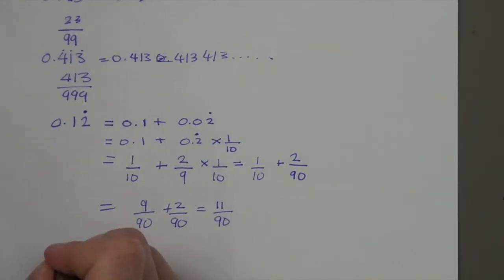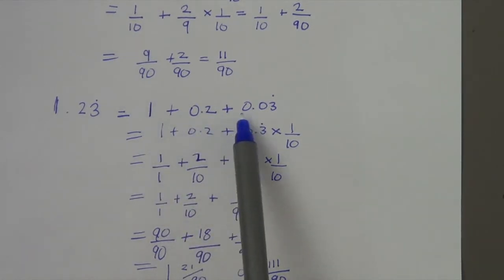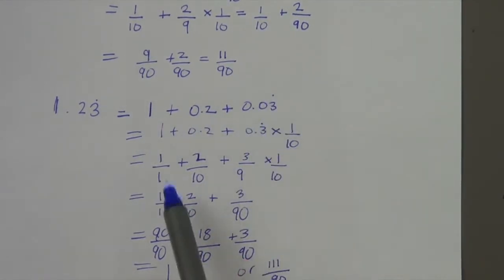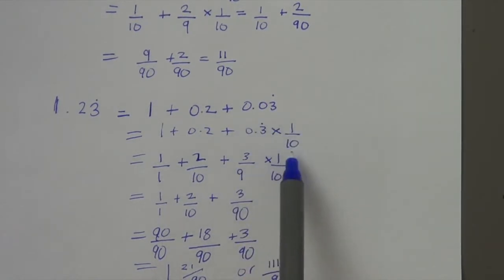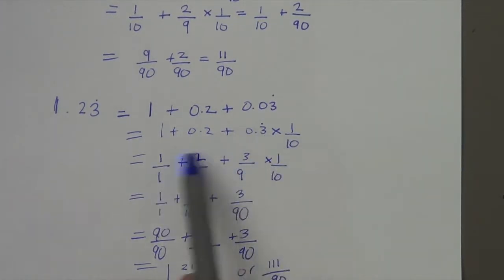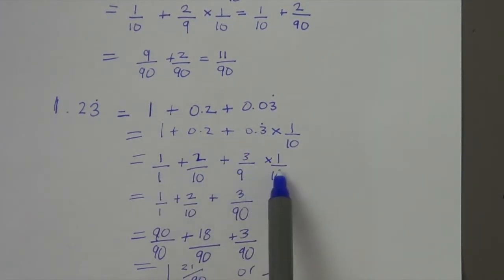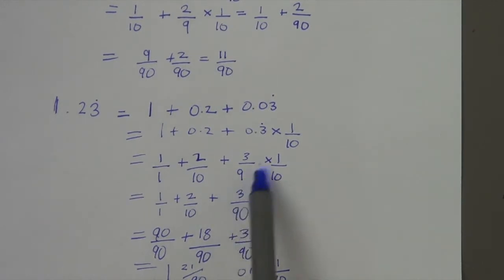So, what about if we have 1.23 recurring? Well, I break it down like this. So I get 1 plus 0.2 plus 0.03 recurring there. That is equal to 0.3 recurring times a tenth. And then make it a fraction. I turn these decimals into a fraction. 3 over 9 times 1 over 10 plus 2 over 10 plus 1 over 1. It simplifies to 3 over 90 from there.